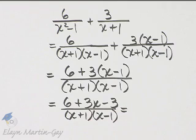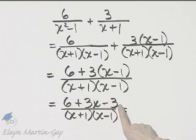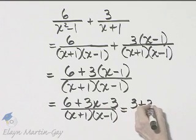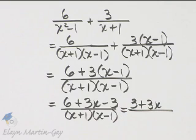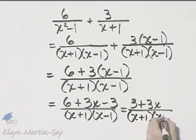And do I have any like terms? Well yes, I have 6 minus 3 which is 3 plus 3x over that denominator. So I've got x plus 1 times x minus 1.